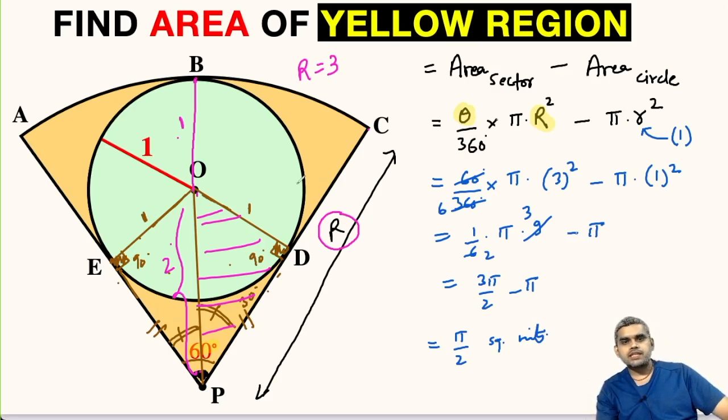The area of this yellow shaded region will be pi by 2 square units. If you like this video, share it with your friends and do not forget to subscribe to my channel.